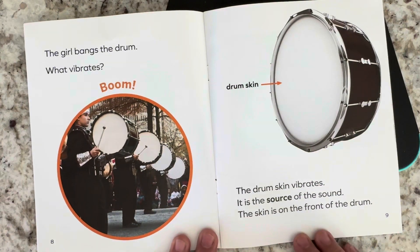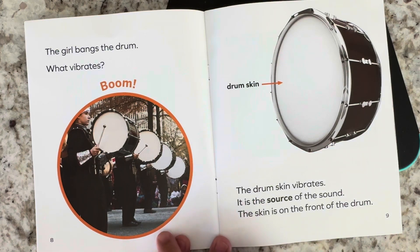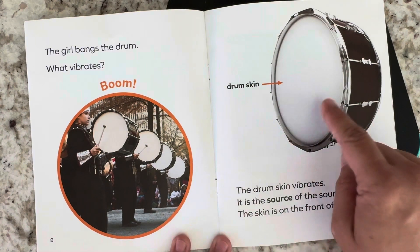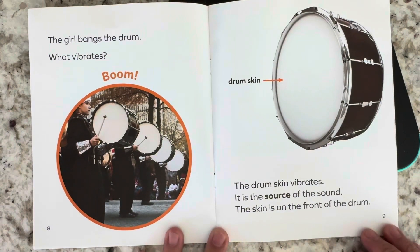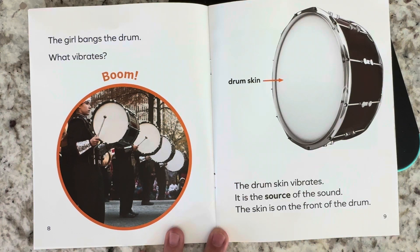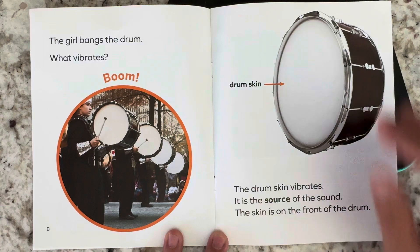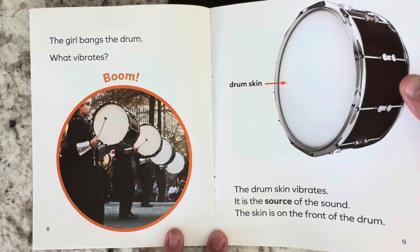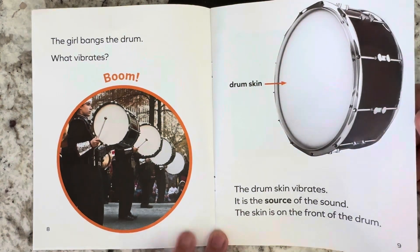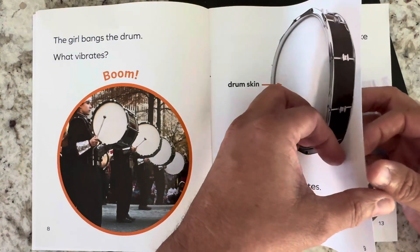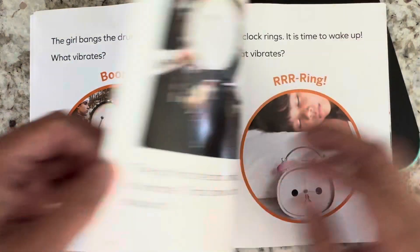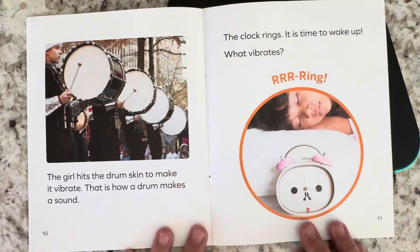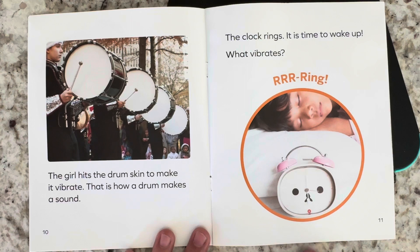The girl bangs the drum. What vibrates? Boom! The drum skin. The drum skin vibrates. It is the source of the sound. The skin is on the front of the drum. The girl hits the drum skin to make it vibrate. That is how a drum makes a sound.